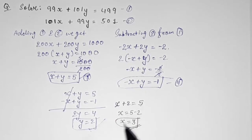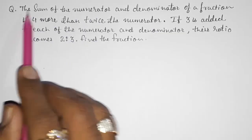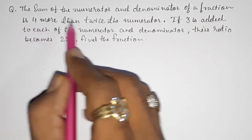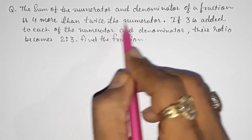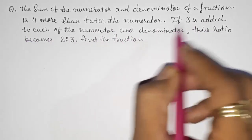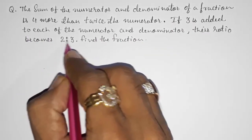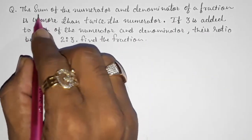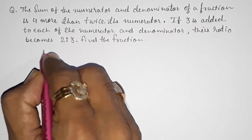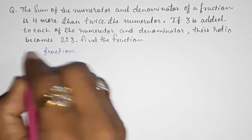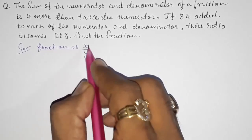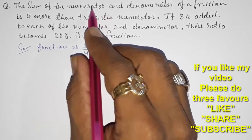Moving to question number 2: The sum of the numerator and denominator of a fraction is 4 more than twice the numerator. If 3 is added to each of the numerator and denominator, their ratio becomes 2:3. Find the fraction. Suppose the fraction is x/y, where x is the numerator and y is the denominator.